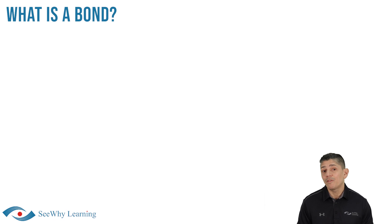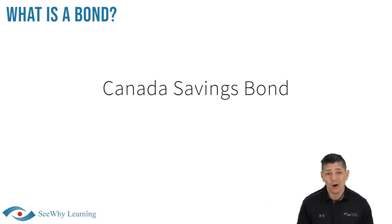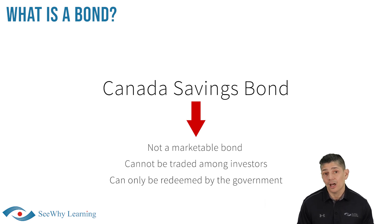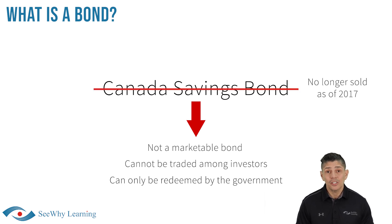Take note: in this video, I'm referring to something called marketable bonds, which are bonds that can be traded among investors in the marketplace, much like stocks do. There's another type of investment known as a Canada Savings Bond, which is issued by the government and is not a marketable bond, as it cannot be traded among investors and can only be redeemed by the government. Even though these are no longer being sold as of 2017, there are still many of them held by investors, so it's very important that you don't confuse the two.